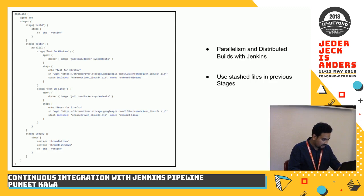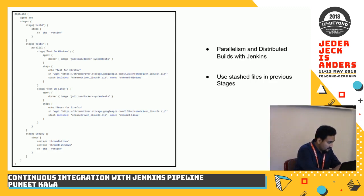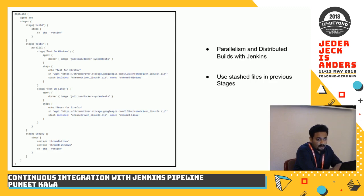In the example on screen, I have a stage 'test'. In that stage, in 'test on Windows' I am fetching Chrome driver. In 'test on Linux' I would normally fetch Chrome driver again, but since I've already done it, in the deploy stage I can just do 'unstash ChromeDriver-Linux' or 'unstash ChromeDriver-Windows' — and that saves a lot of time.